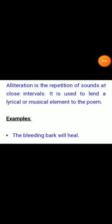Now, see the poetic devices from the poem. Alliteration is the repetition of sounds at close intervals. It is used to lend a lyrical or musical element to the poem. See the poem line: 'The bleeding bark will heal.' Here, the poet has repeated the B sound — the starting letter — in close succession.